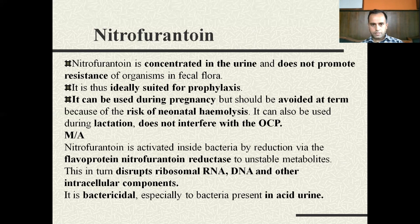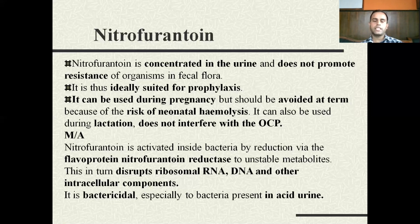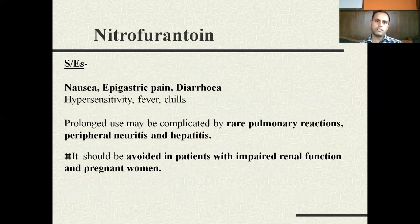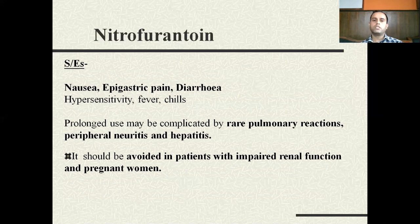The mechanism of action of nitrofurantoin: it is activated by the bacteria through reduction by the flavoprotein nitrofurantoin reductase to unstable metabolites. It then disrupts ribosomal RNA, DNA, and other intracellular components. It is bactericidal, especially against bacteria present in acidic urine. That is why potassium citrate should not be given with nitrofurantoin — potassium citrate is a urine alkalizer and would antagonize the effect of nitrofurantoin. Side effects include nausea, epigastric pain, diarrhea, hypersensitivity, fever, chills, pulmonary reactions, peripheral neuritis, and hepatitis.